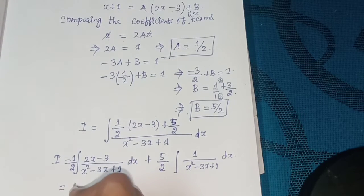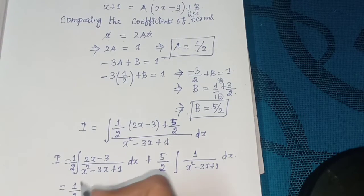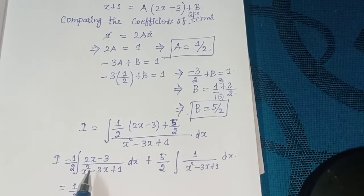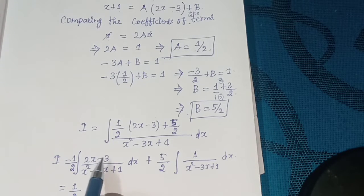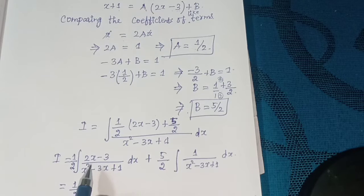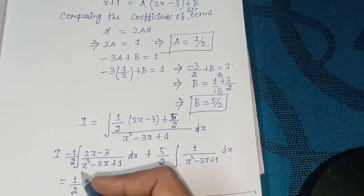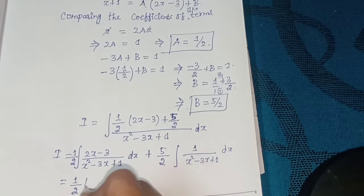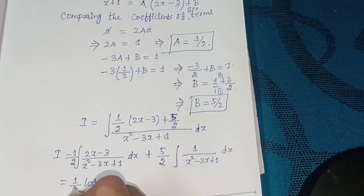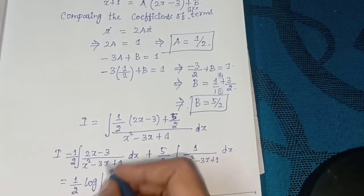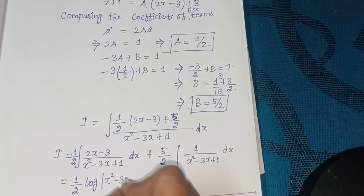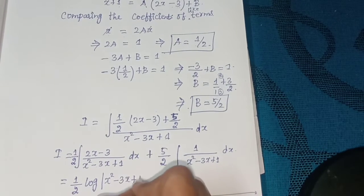For the first integral, since differentiating (x² - 3x + 1) gives (2x - 3), we get (1/2) into log |x² - 3x + 1|.